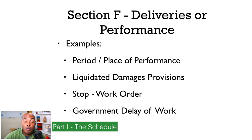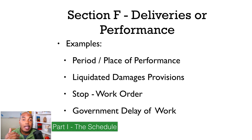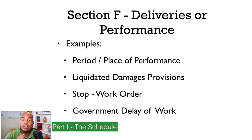Section F covers deliveries or performance. This talks about the place of performance, the period of performance, the time frame, and any liquidated damages. Liquidated damages are when you are delaying a project and the government charges you a penalty — for example, $1,000 or $500 a day for delays in delivering the product. It also tells you what triggers stop work orders, and if the government happens to delay you, what are the implications and how do you recoup your lost time, money, and efforts.